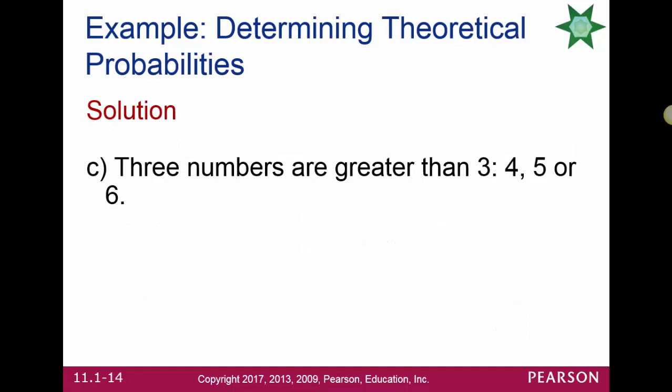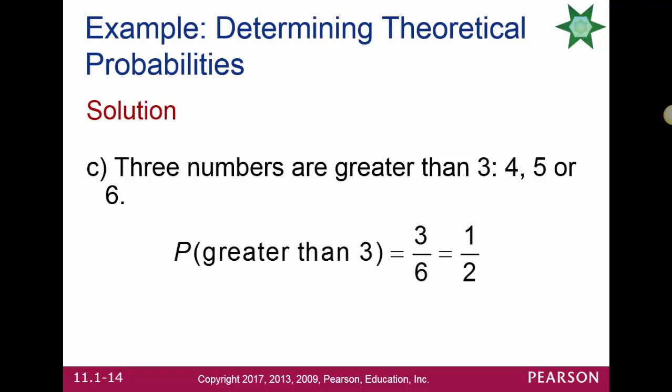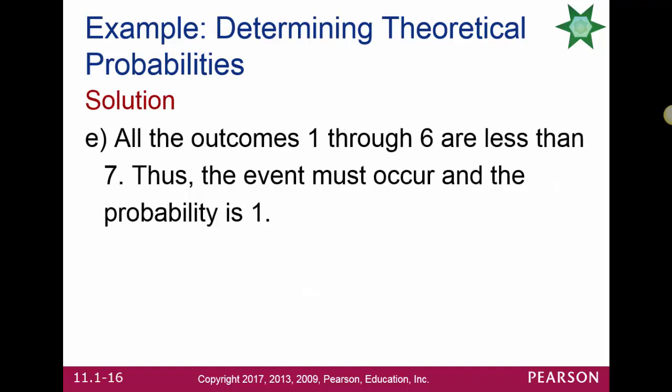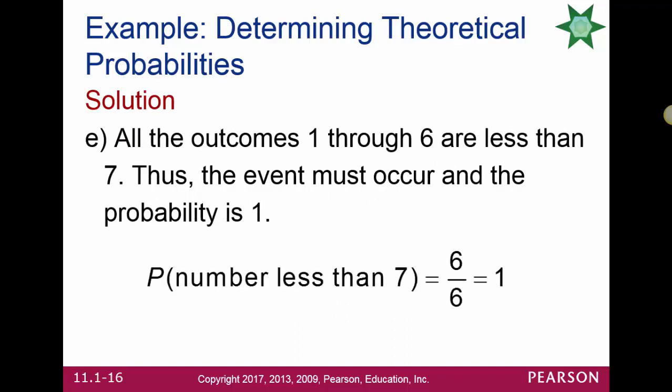The probability of getting a number greater than 3 — getting a 4, 5, or 6 — is 3 out of 6, or 1 half. The probability of getting a 7 is 0, since there are no outcomes resulting in a 7; this is called an impossible event. The probability of getting a number less than 7 is 6 out of 6, or 1, since all outcomes are less than 7; this is called a sure or certain event.